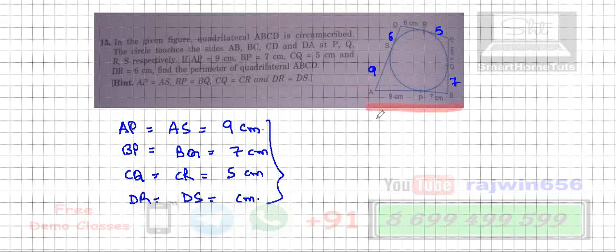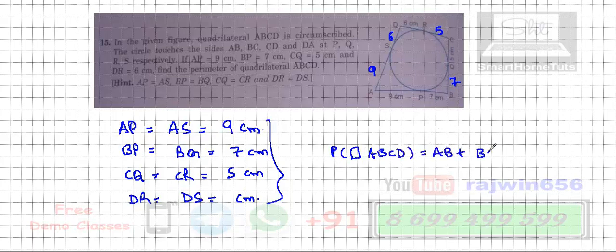So basically I'm supposed to add all of these sides. That's going to give me the sum of all four sides, which is going to be the perimeter of the quadrilateral. So I'm directly writing it down. Perimeter of quadrilateral ABCD is equal to AB plus BC plus CD plus DA.